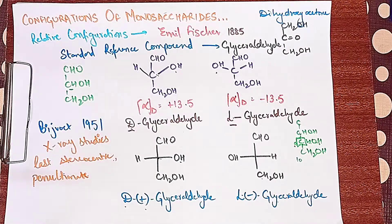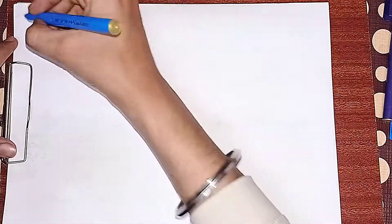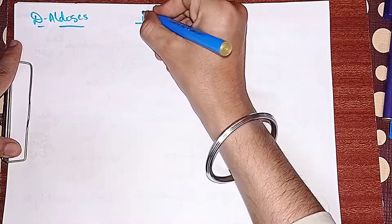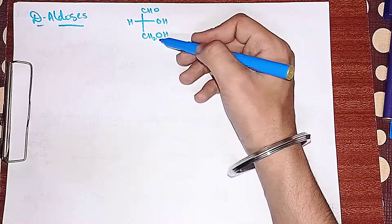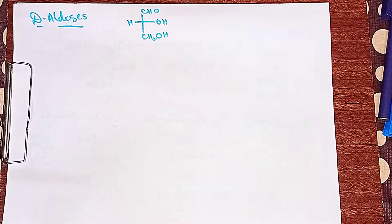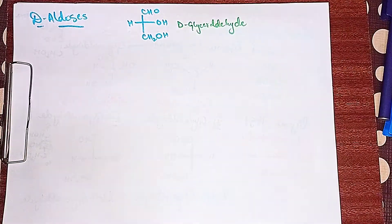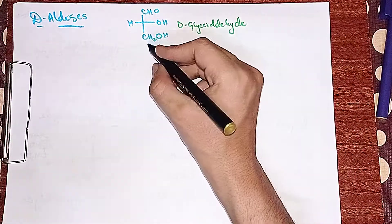Now we will study the configurations of the D-series and L-series of aldoses and ketoses. Starting with D-glyceraldehyde: it has CHO at the top, OH on the right, H on the left, and CH2OH at the bottom. If we introduce one more carbon atom into D-glyceraldehyde, the new carbon can have two configurations.